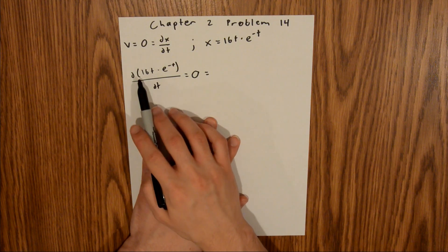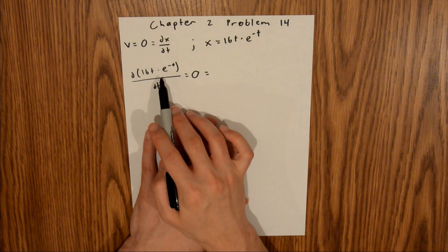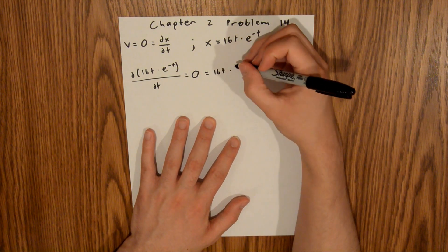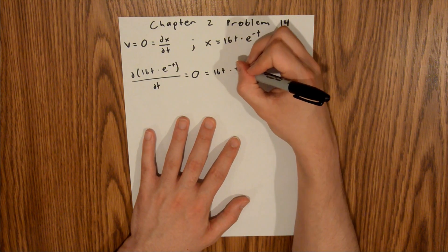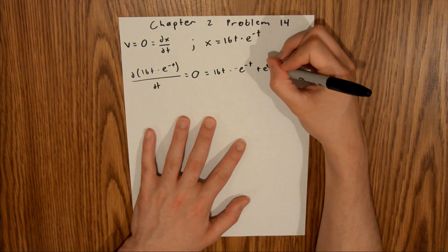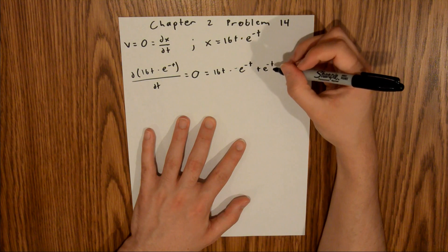I'm going to make 16t the first term, and e to the negative t the second term. So it's the first term times the derivative of the second term, plus the second term times the derivative of the first term.